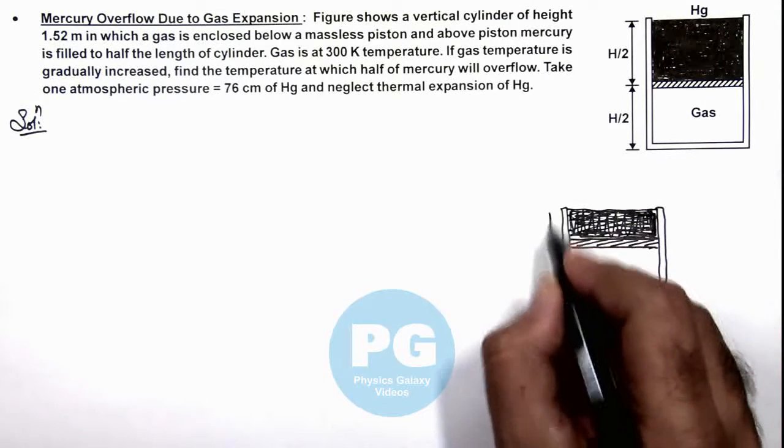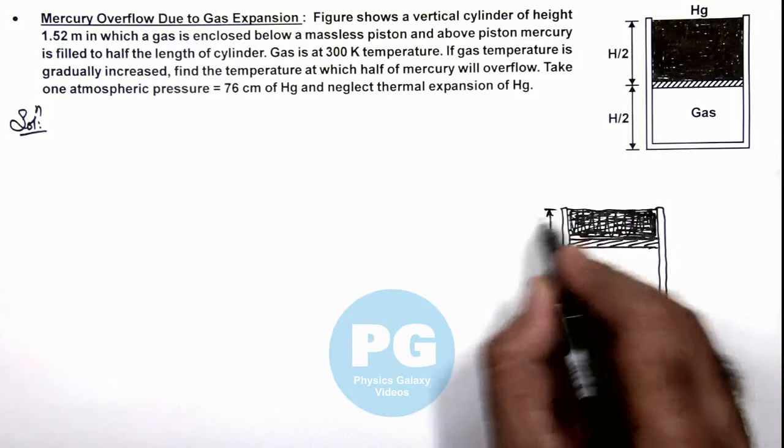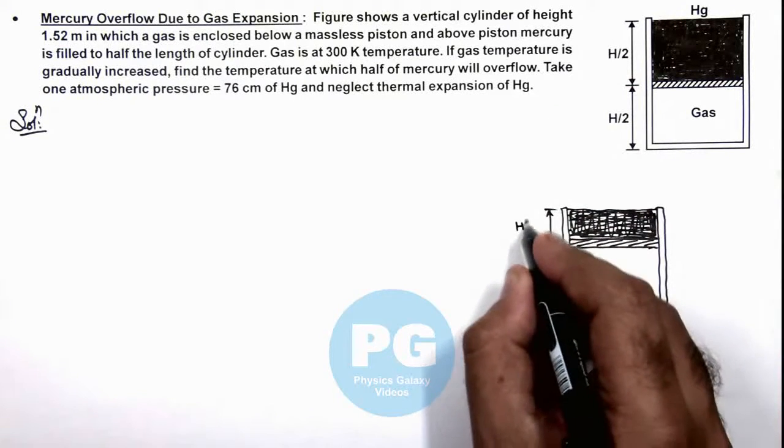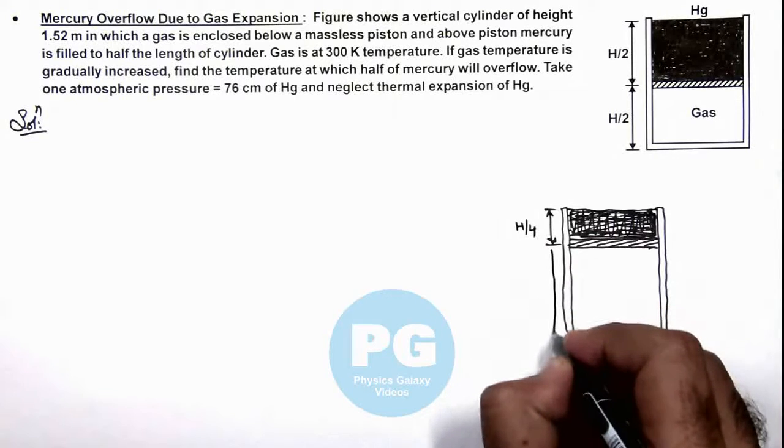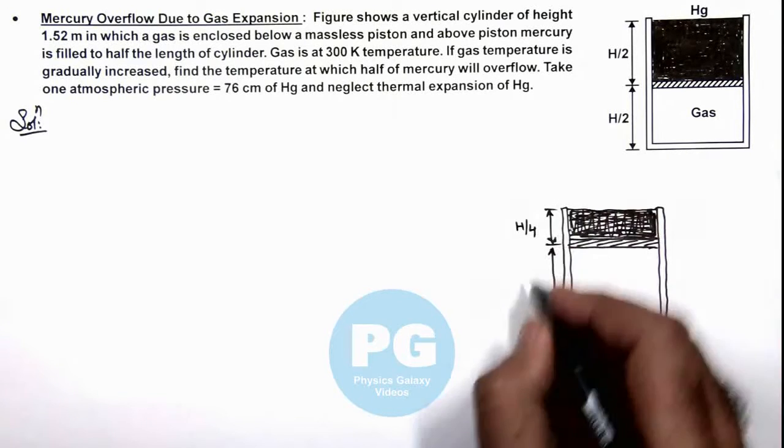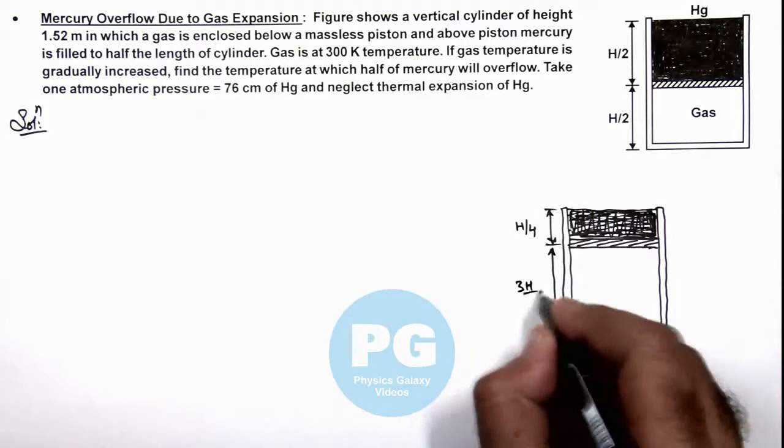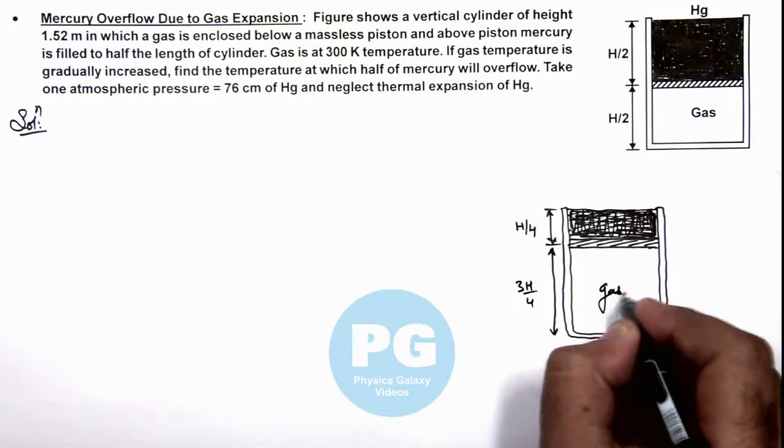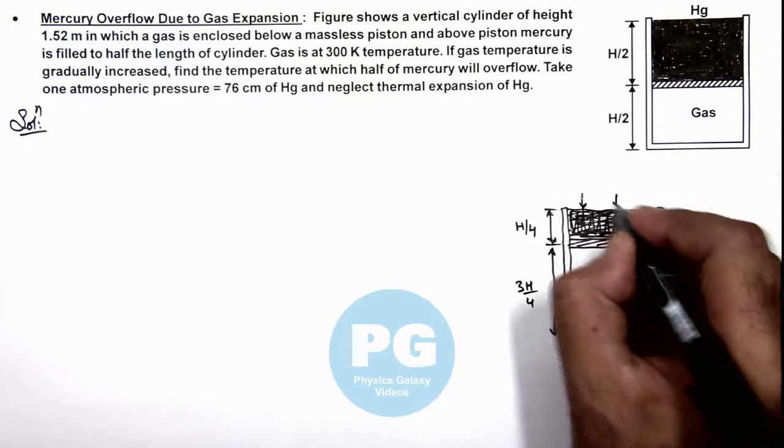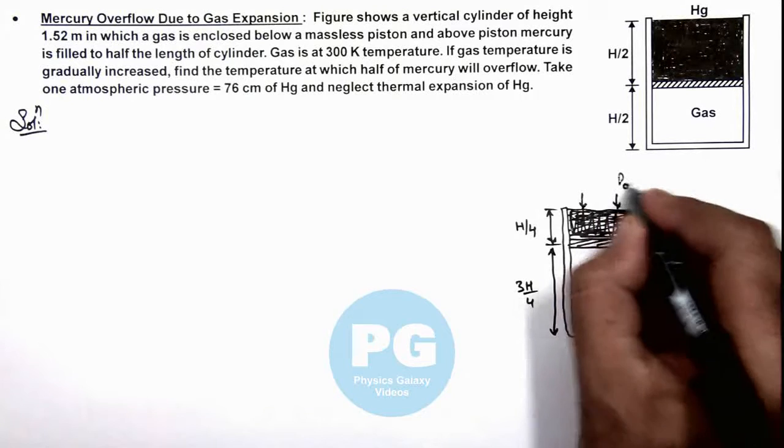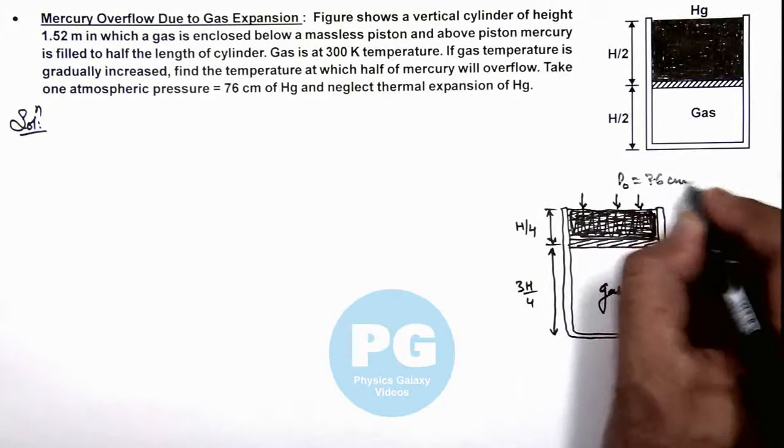Here we can consider this length is only now h by 4. The gas volume is increased from h by 2 to 3h by 4. On it, atmospheric pressure is still acting, which is 76 centimeters of mercury.